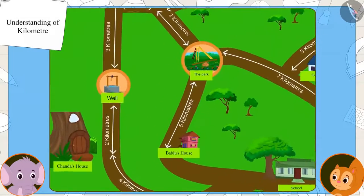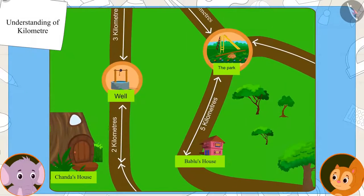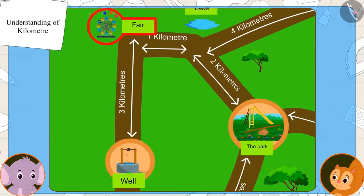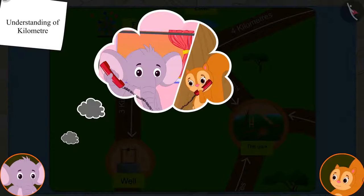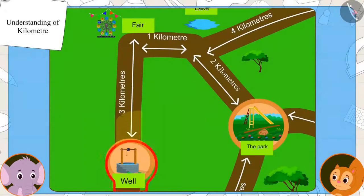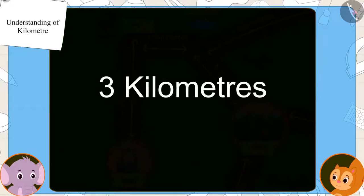Look at this, Chanda. We will start from the well. And first, we will go to the fair. As I told you on the phone yesterday, you can see the distance from here to the fair on the map. See, the distance is written on the map as three kilometers.